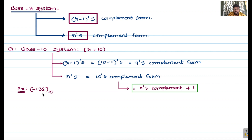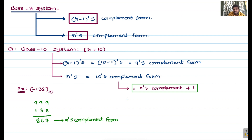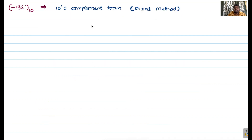To find the 9's complement of 132, since we have three digits, we take three 9's: 999 minus 132. 9 minus 2 is 7, 9 minus 3 is 6, 9 minus 1 is 8. So the 9's complement form is 867. Now adding plus 1 to 867: 7 plus 1 is 8, giving us 868. So 868 is your 10's complement form of minus 132.